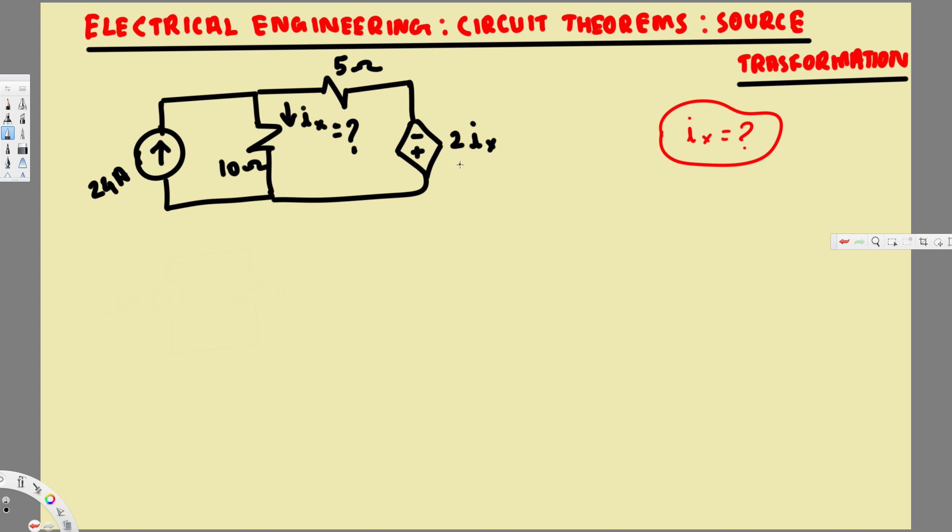Now let's see how we can do this. The first thing we can do is turn this dependent voltage source into a dependent current source and see whether we can simplify this. I'm going to keep the other things as it is, so this is going to be 24 amps right here, and then here we're going to have 10 ohm.